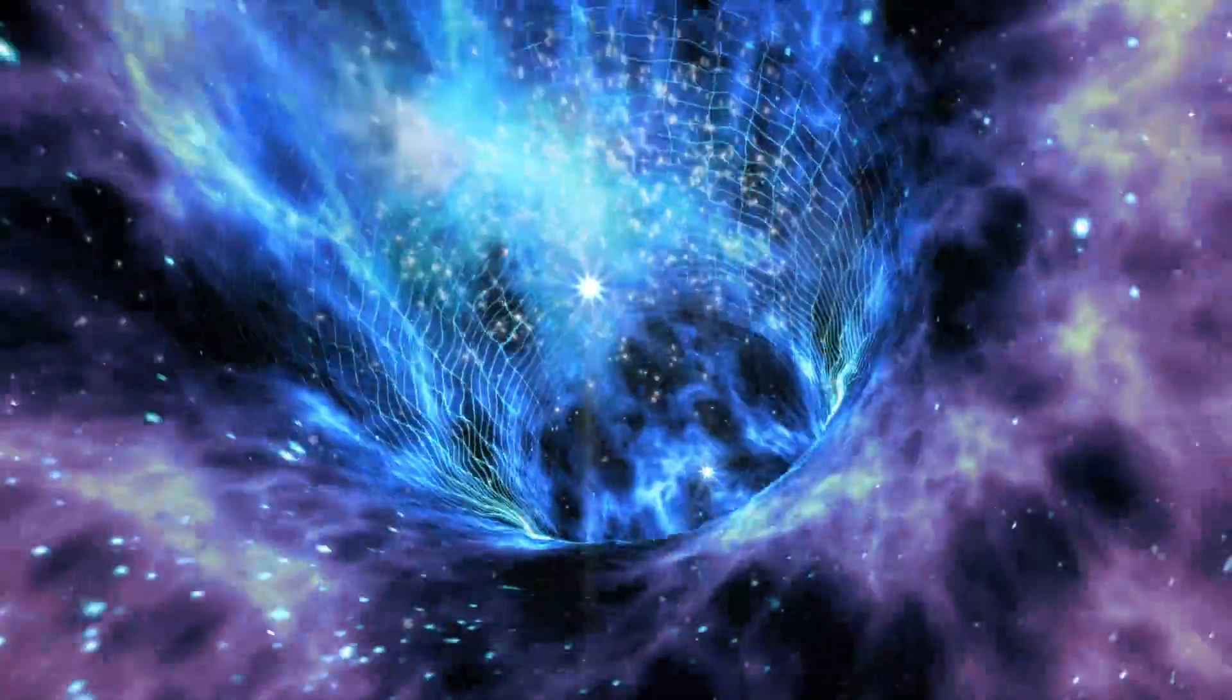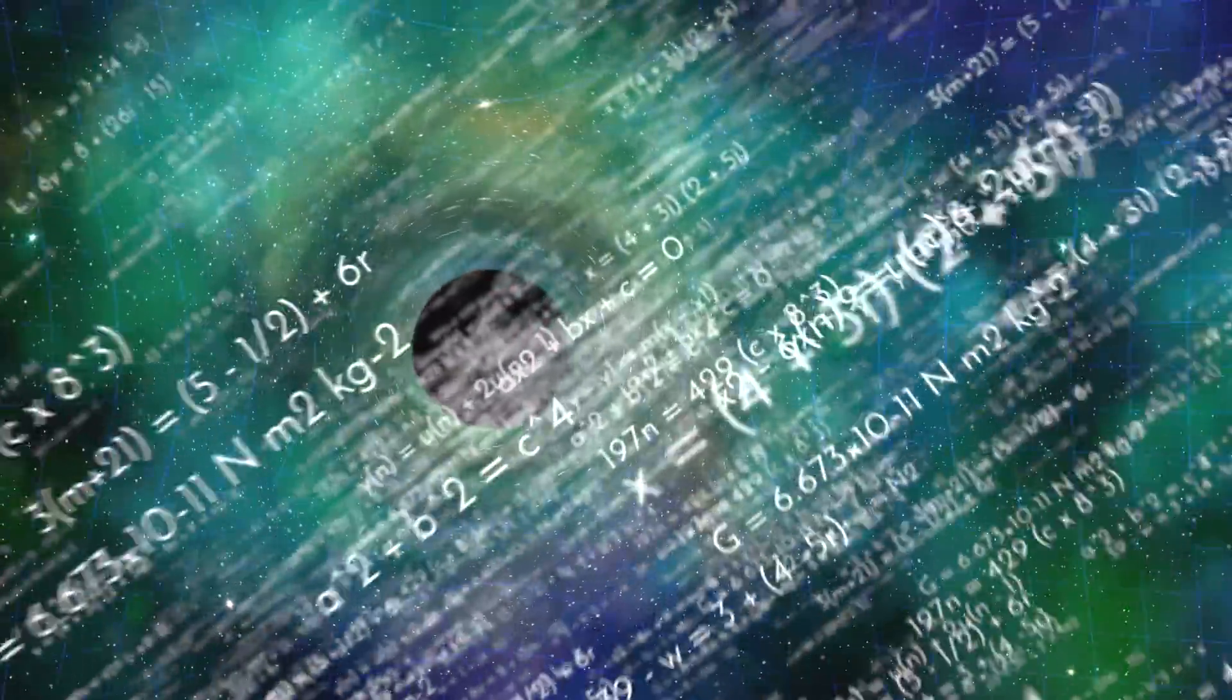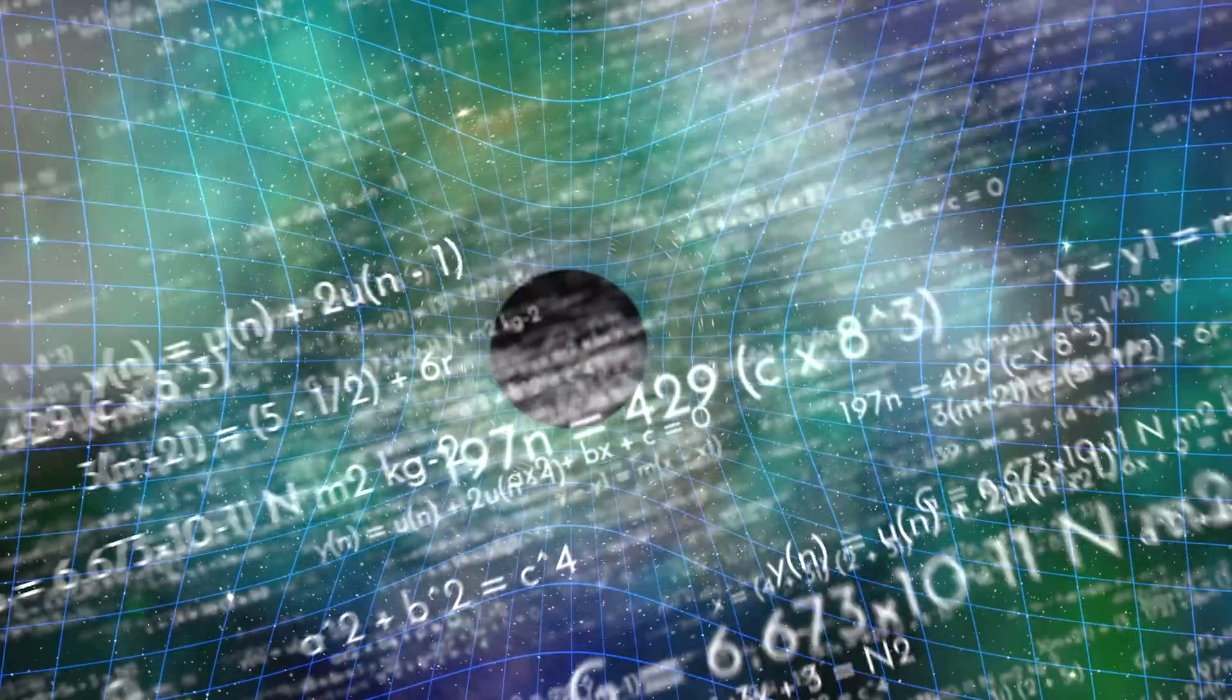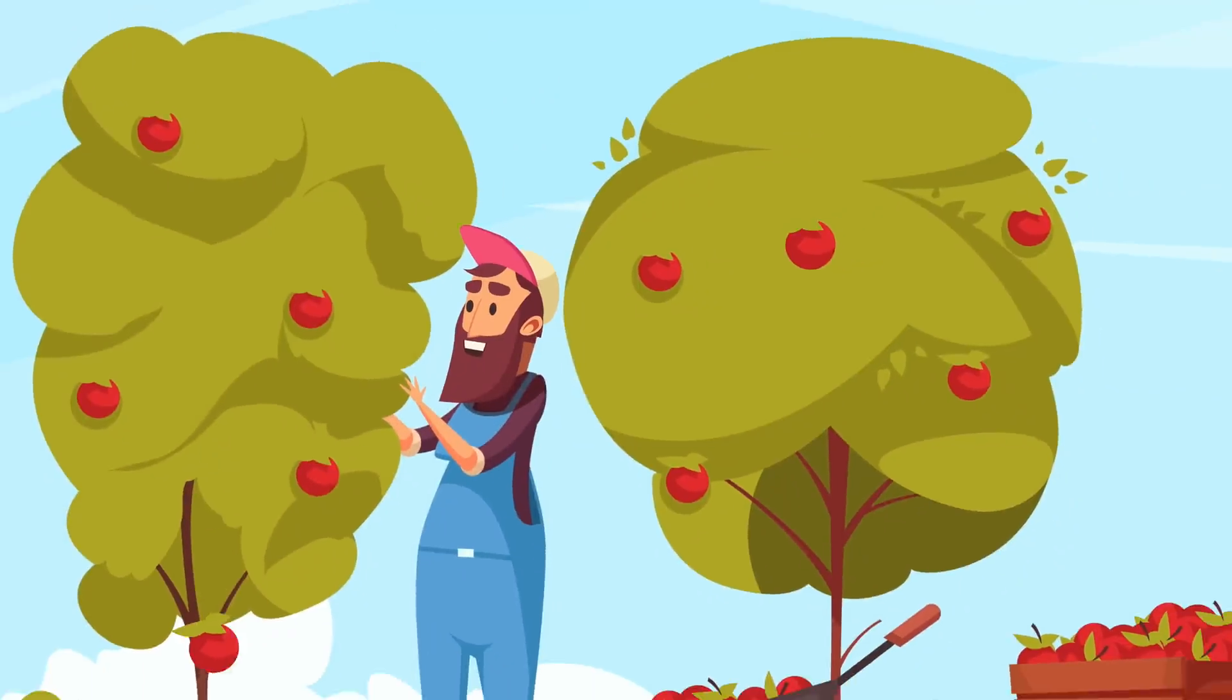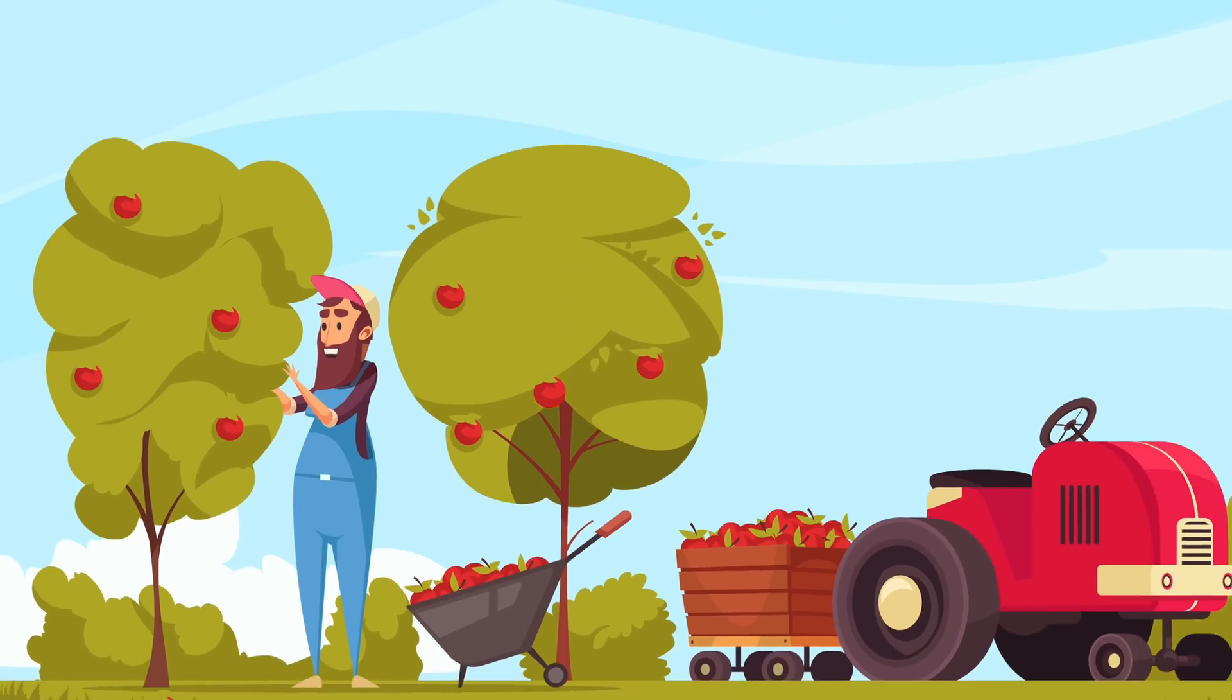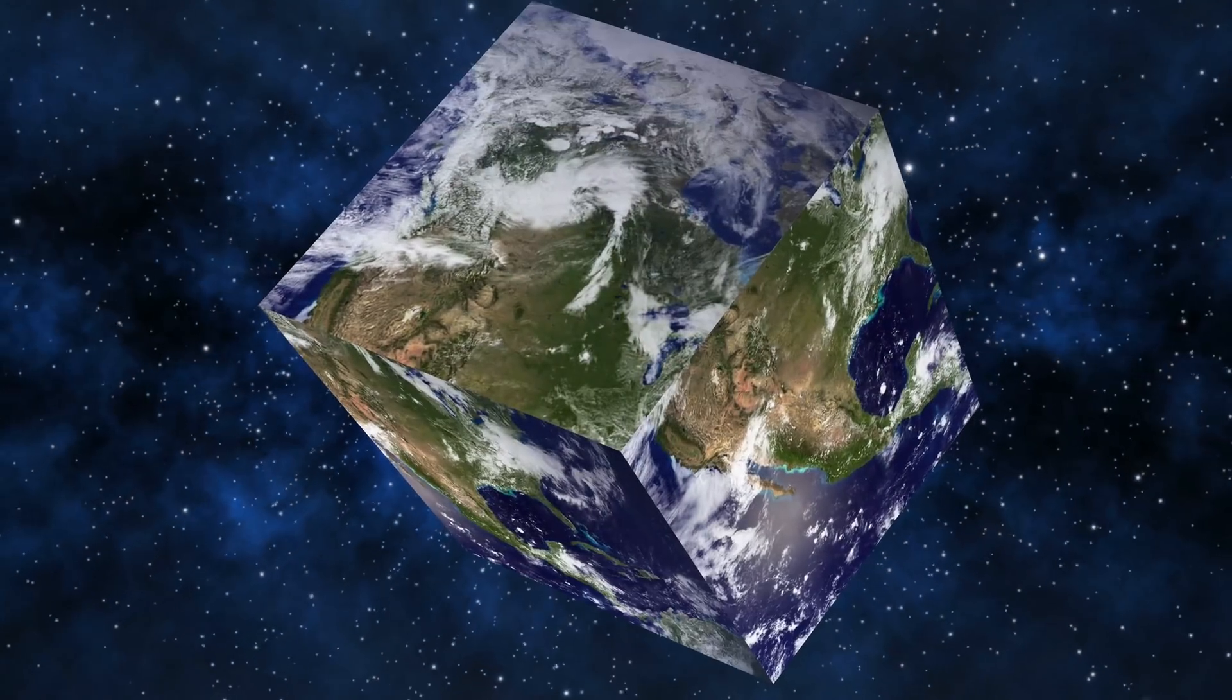Hypothetically speaking, though, what would happen to our world if it was a cube? Well, first off, everything we know about gravity would change. We would need to reshape every single equation related to gravitation. The amount of gravity every object on Earth has would significantly change.